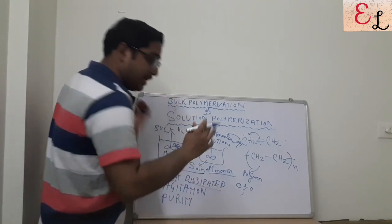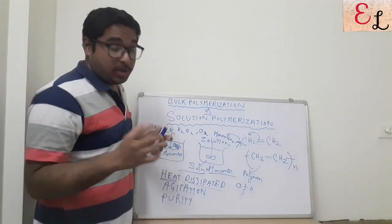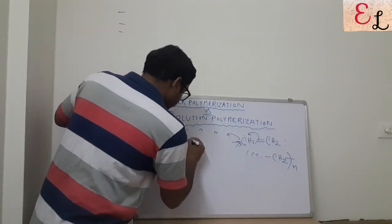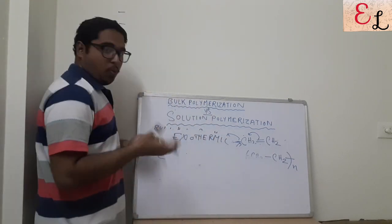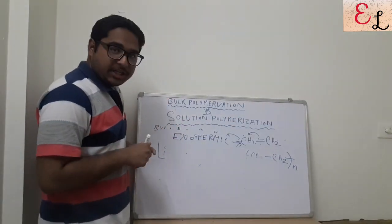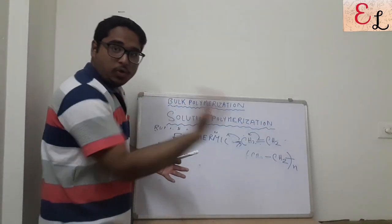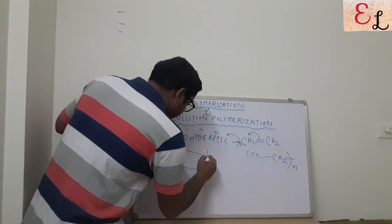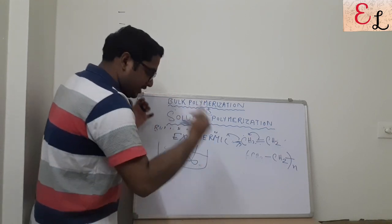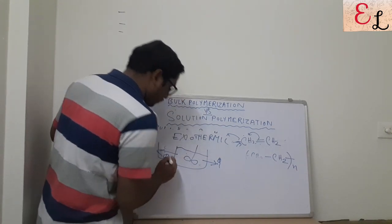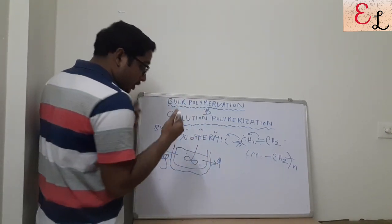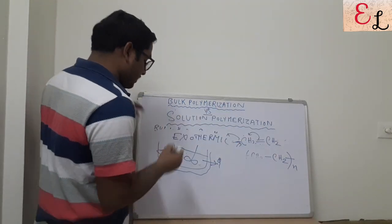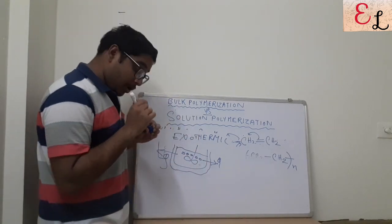Talking about the first point — heat dissipation. As we know, polymerization is an exothermic process. So when we talk about an exothermic process, we need to remove the heat, as per Le Chatelier's principle, to provoke the forward reaction. We need to dissipate the heat produced and collect it from the periphery. If this is my chamber and the reaction is going on, you need to remove the heat by keeping a cooling jacket or some arrangement so that the heat doesn't build up within the system.